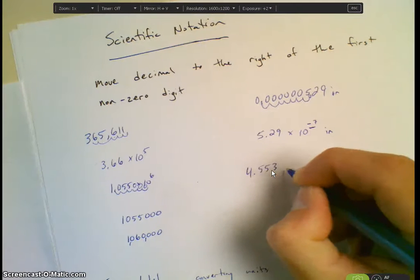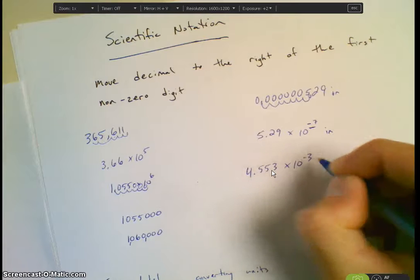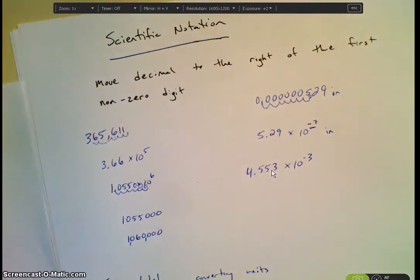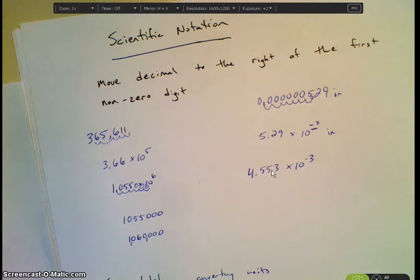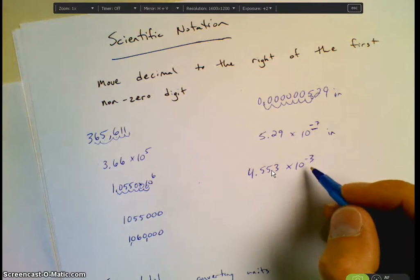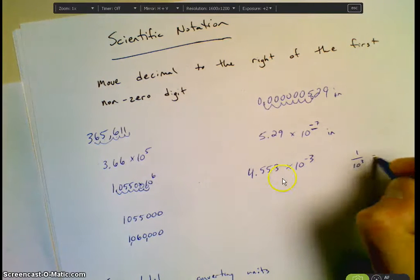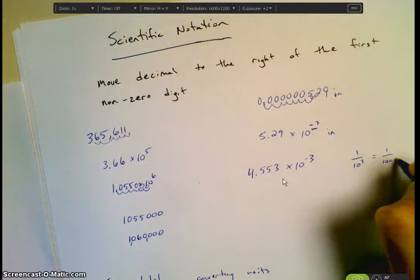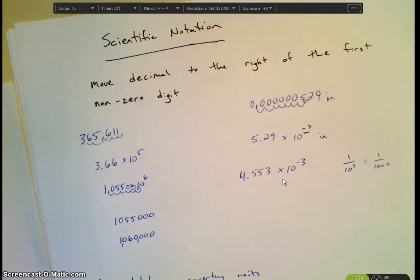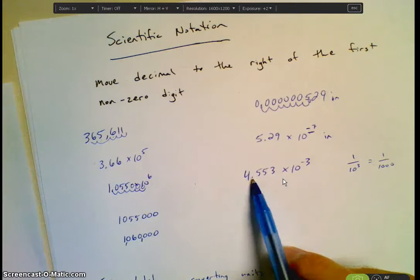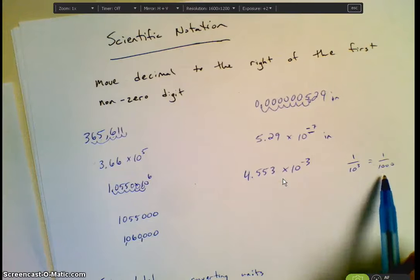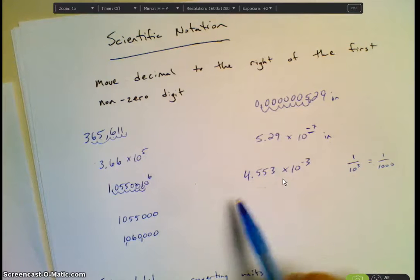Let's look at the next example. 4.553 times 10 to the negative third. Again, 10 to the negative third is actually what number? You guys know negative exponents? 10 to the negative third is? Yeah, 1 over 10 to the third, which is 1 over 1,000. Okay? So we're multiplying 4.5 times 1 over 1,000, which is going to make 4 a smaller number.